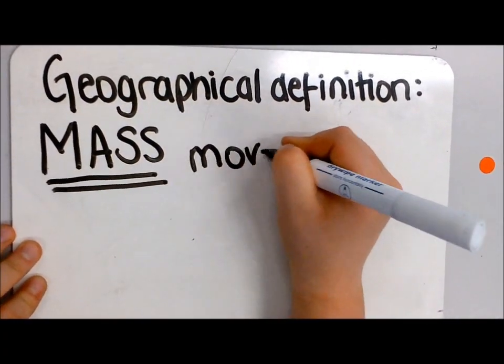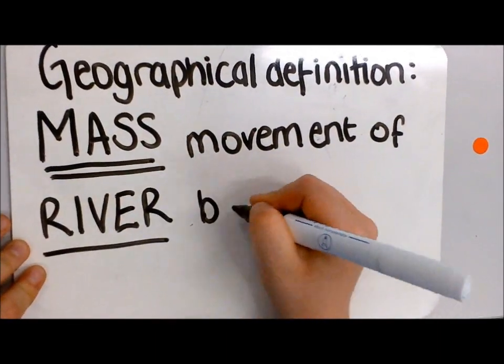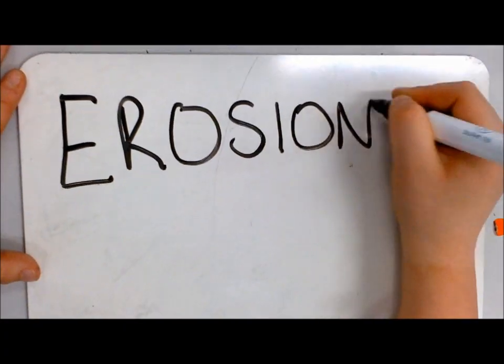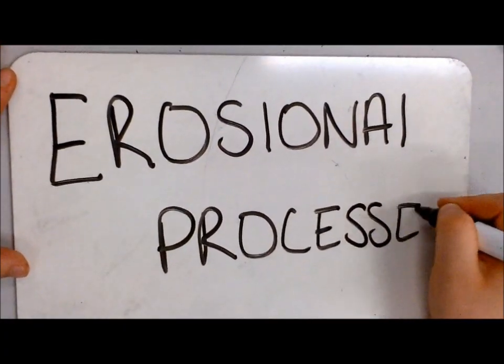slumping is the mass movement of the riverbanks. It's caused by erosional processes. Let's break it down.